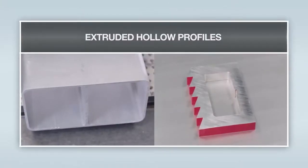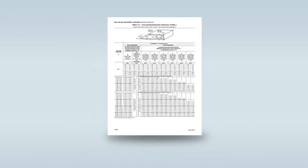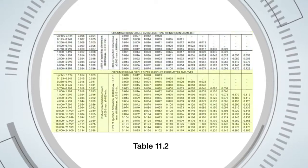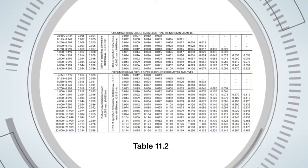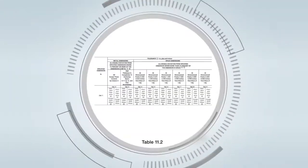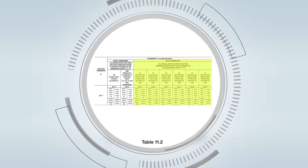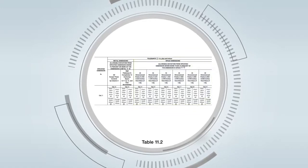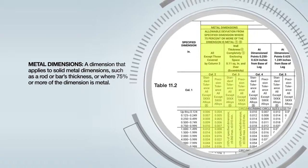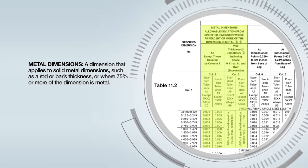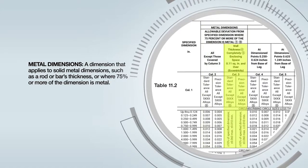For our third example, let's look at extruded hollow profiles. These tolerances can be found in table 11.2. This table is divided into two groups of tolerances based on the circumscribing circle size of the profile: those with a circle size less than 10 inches and those with 10 inches or more. As the size of the profile increases, the tolerances also increase. This table is further divided into two main categories: tolerances for metal dimensions and tolerances for space dimensions. The tolerance values in this table are also shown as plus and minus tolerances.